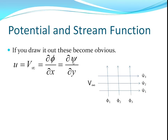At right angles to the streamlines, we have the equipotential lines, which are your potential functions. We can equate this with the Cauchy-Riemann equations in Cartesian coordinates — you should know these from previous courses. This is the u component of velocity, the component acting in the x direction, so from left to right that's obviously v infinity. And v is going to be 0 because all of the flow is going left to right — there's no flow going up or down, hence v equals 0.